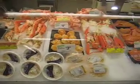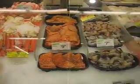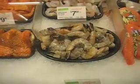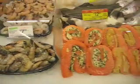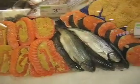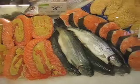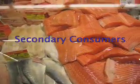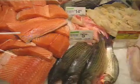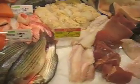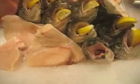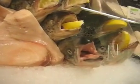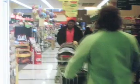Secondary consumers are next up in the food web. They are also known as omnivores or carnivores. These consumers are organisms that eat and get energy from the primary consumers. Large fish and humans are examples of secondary consumers. Humans are considered omnivores because they eat both plants and animals. When humans eat large fish who are eating smaller fish, they become tertiary consumers.